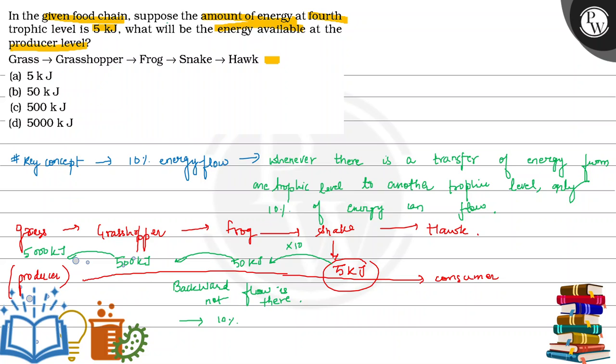Now the question is, what amount of energy will be available at the producer level? 5,000 kJ. So the correct answer to the question is 5,000 kJ of energy. I hope you understand it. Best of luck and thank you.